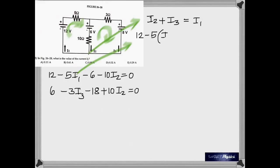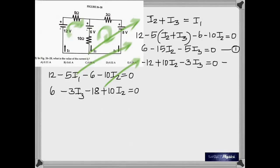Substitute for I1 in that equation. Distribute. Collect the common terms. You get an equation 1. And from here, when you collect 6 and negative 18 and rearrange, you get equation 2.